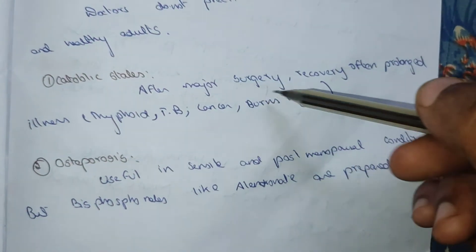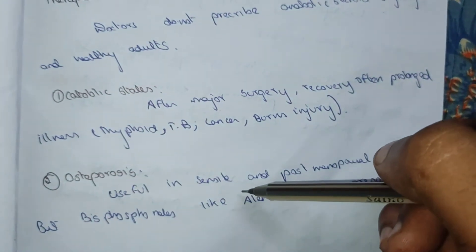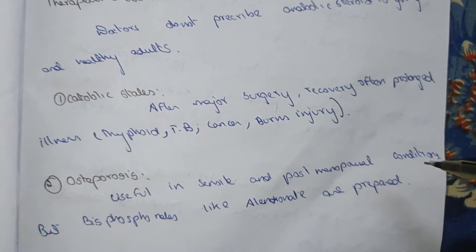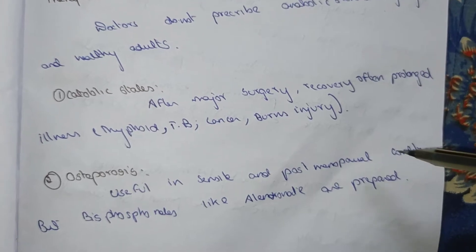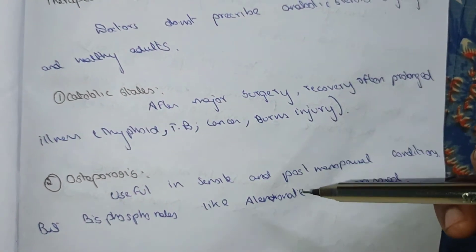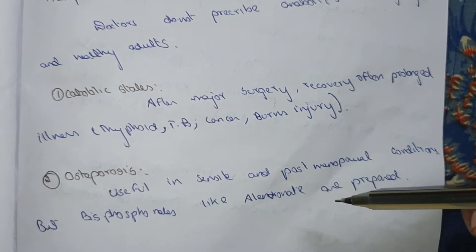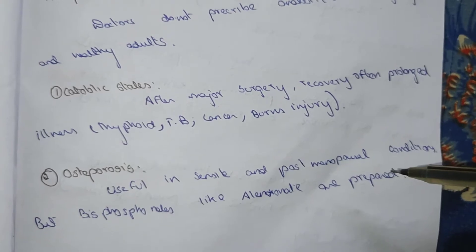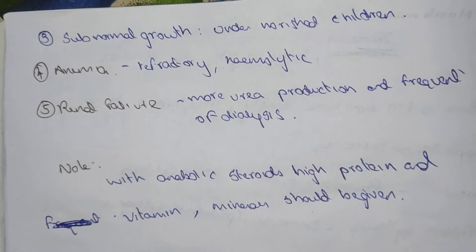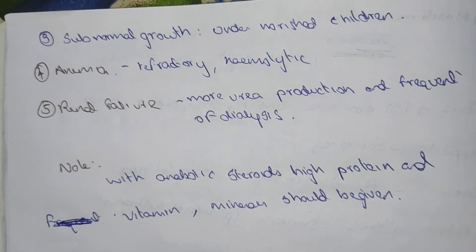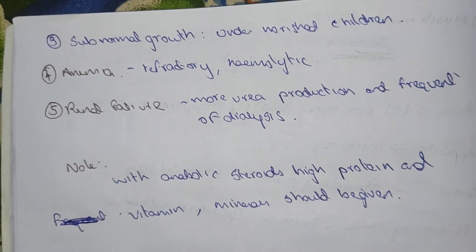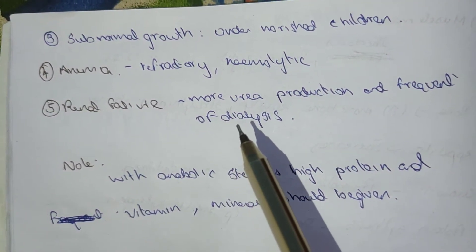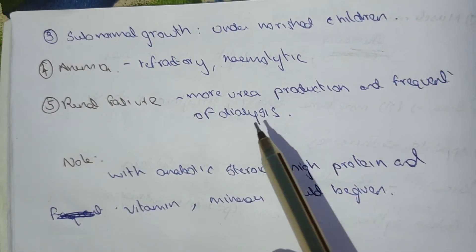Osteoporosis — anabolic steroids are used in senile and postmenopausal conditions, but bisphosphonates and alendronate are preferred. Subnormal growth in undernourished children is another indication. Anemia — refractory and hemolytic anemia.